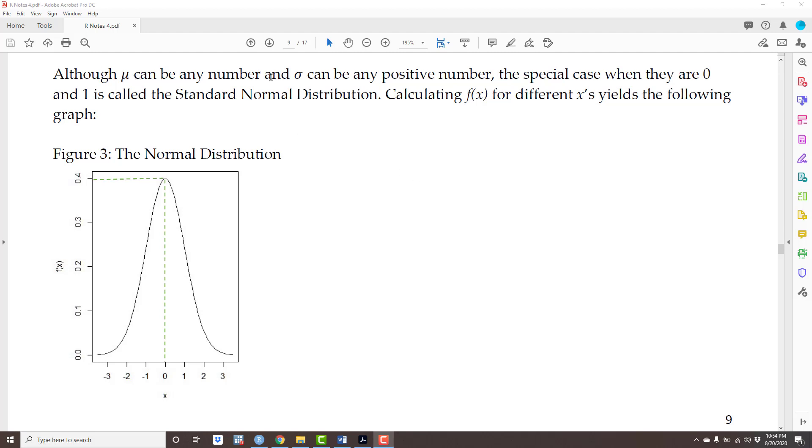μ can be any number and σ can be any positive number. The special case when they are 0 and 1 respectively is called the standard normal distribution. So the standard normal distribution is just a normal distribution where μ is 0 and the standard deviation is 1. We are going to be using this distribution extensively.